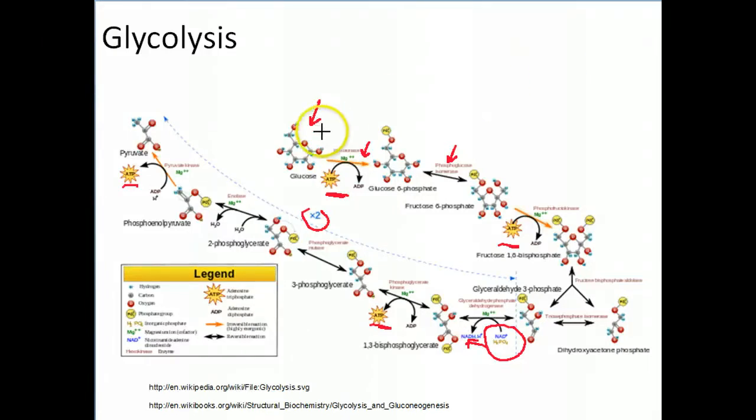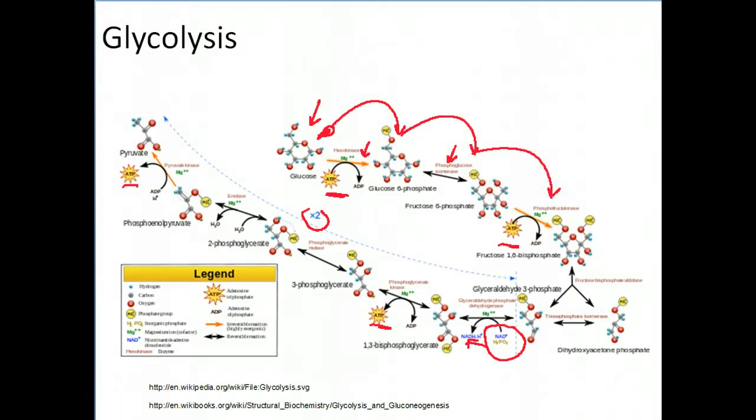So let's follow the pathway. Here we are with glucose. We went through one enzymatic reaction. We've changed it to glucose 6-phosphate. We've gone through a second enzyme reaction to fructose 6-phosphate. Now a third went to fructose 1,6-bisphosphate.